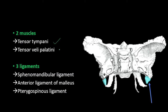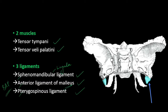The three ligaments attached to the spine of sphenoid are: the sphenomandibular ligament, the anterior ligament of malleus, and the pterygospinous ligament. The sphenomandibular ligament has its other end attached to the lingula, which is present on the internal surface of the ramus of the mandible — like a tongue-shaped covering over the mandibular foramen. The anterior ligament of malleus is attached to the malleus, which is an ossicle. The pterygospinous ligament is attached to the lateral pterygoid plate.